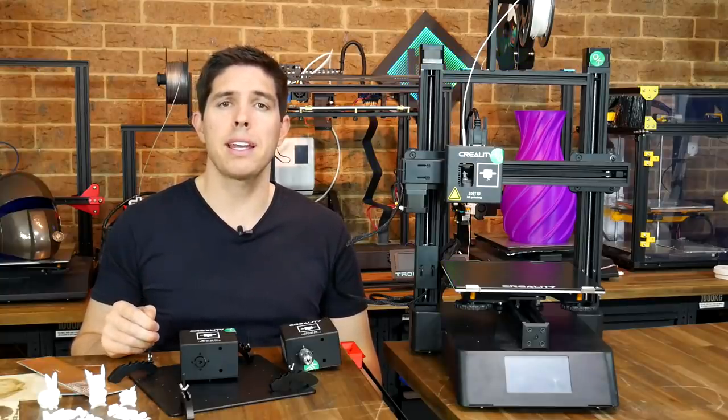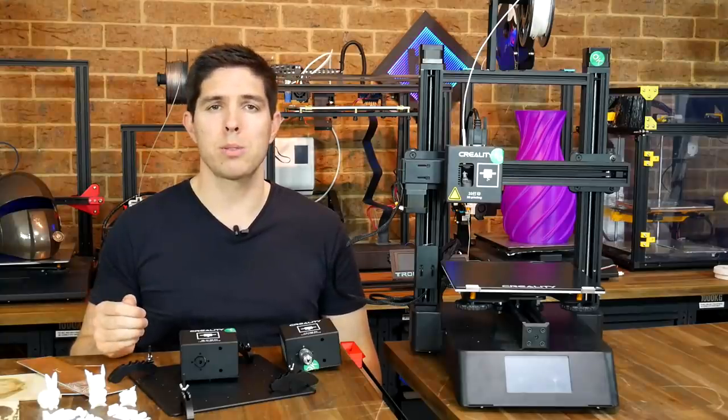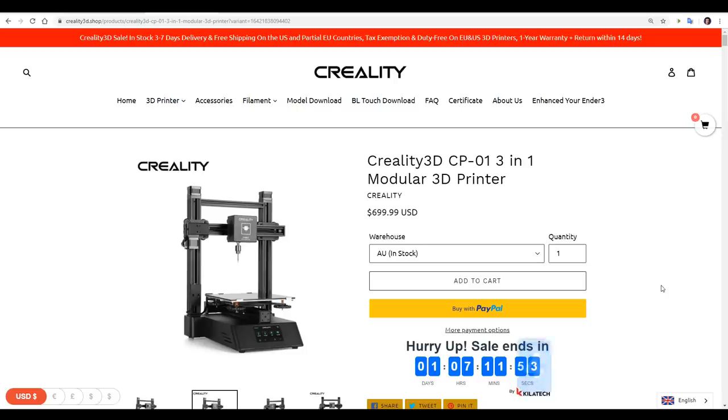Let's start by looking at the specs. Here is the product page for the CP-01, and as it says, it's a 3-in-1 modular 3D printer. The base price is $700, but that will vary depending on the warehouse that you select. For instance, it's on sale for $100 cheaper, but it's not quite ready to ship yet from there.